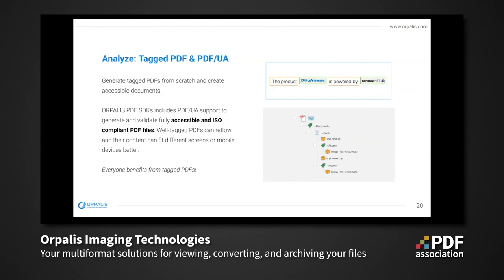With tagged PDF and PDF-UA features, you can generate tagged PDF from scratch and create accessible documents. Accessibility is mandatory and a requirement in more and more administrations and large companies worldwide. Orpalis PDF SDKs include PDF-UA support to generate and validate fully accessible and ISO compliant PDF files. Well-tagged PDFs can reflow and their content can fit different screens or mobile devices better, providing everyone with a better reading experience.